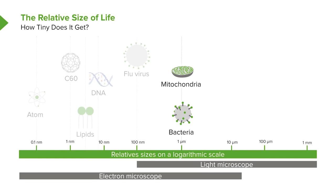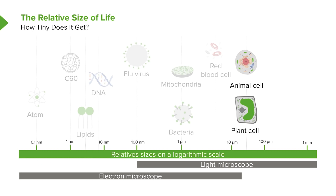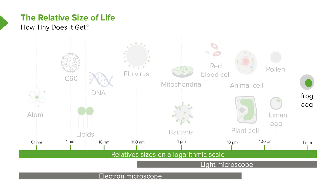Above the level of bacteria, we can see red blood cells. They're not that much bigger because they don't have many of the components inside them that most of our cells have. But when we get up to the level of our animal cells or plant cells, we can see that there's much more complexity in them, some of which you can even see under a light microscope. It's not until we get up to the level of a frog egg that we could even see this with the naked eye.